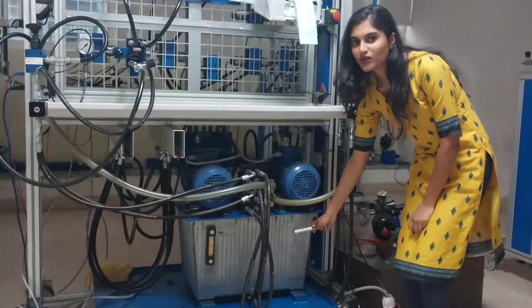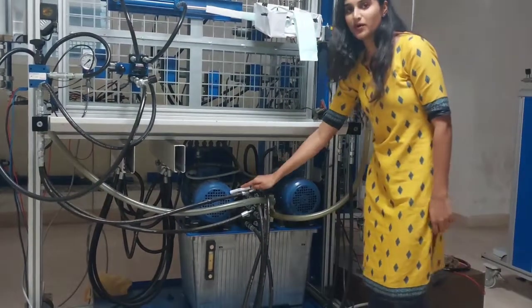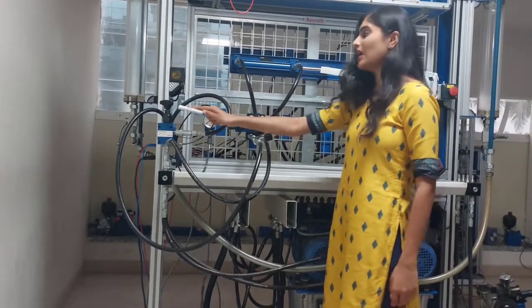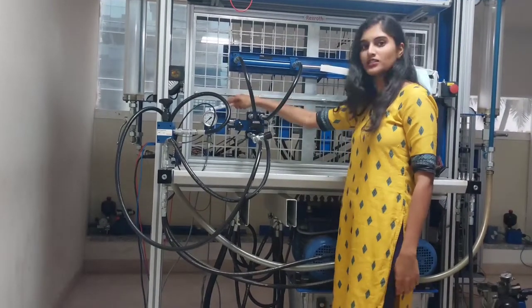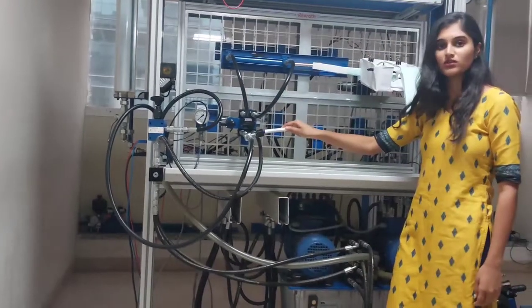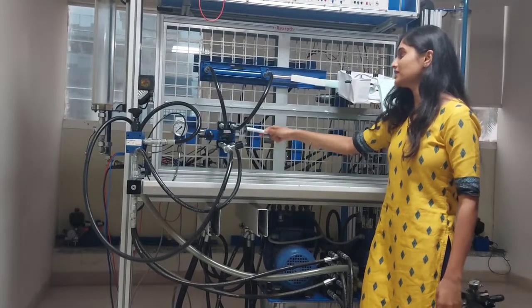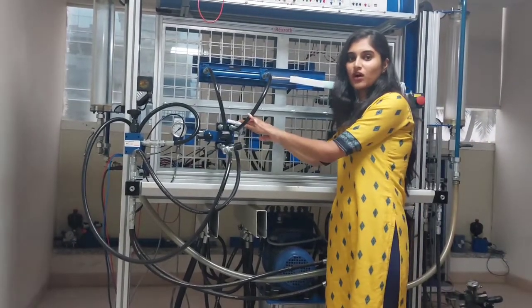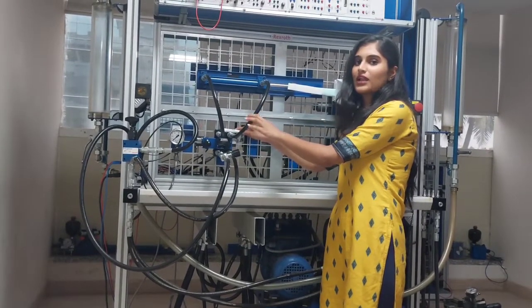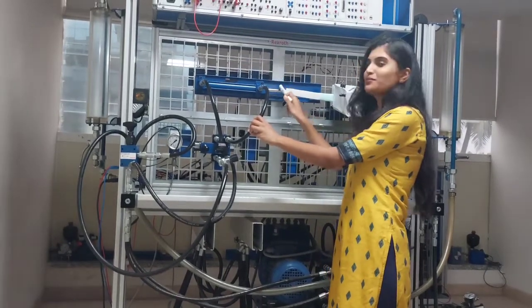This is the reservoir used to store the hydraulic fluid. This is the pump and this is the pressure relief valve to release the pressure, and this is the pressure gauge which indicates the pressure units. This is the flow control valve used to control the flow of the fluid, and this is the 4 by 3 directional valve. These two ports are connected with the help of hose, and these are the double acting cylinders and this is the piston.